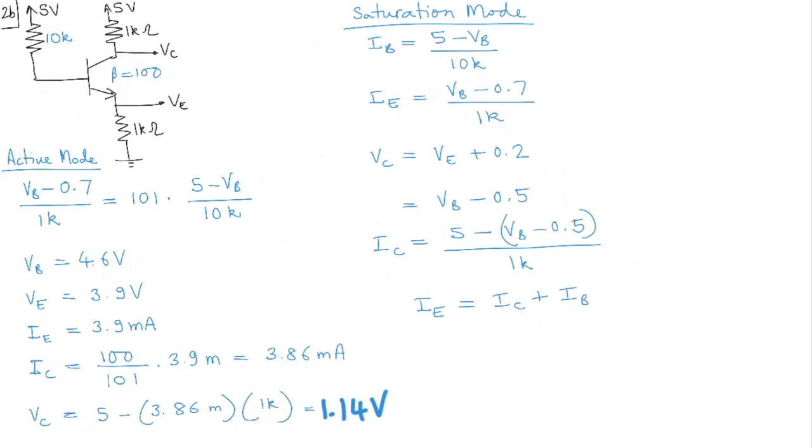Ie equal to Ic plus Ib. So we can put it and we get an equation in Vb. So we get Vb minus 0.7 divided by 1k. That's Ie. And Ic is 5 minus Vb minus 0.5 divided by 1k plus what is Ib? Ib is 5 minus Vb divided by 10k. And if you solve this, you should get Vb equal to 3.7 volts.